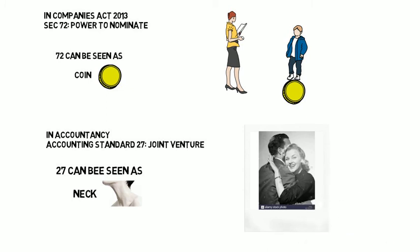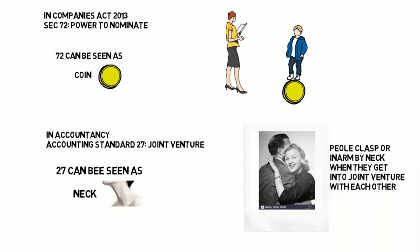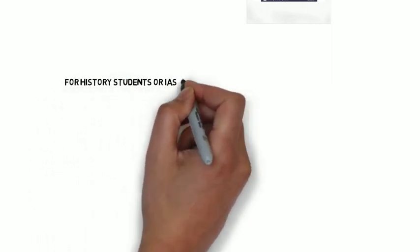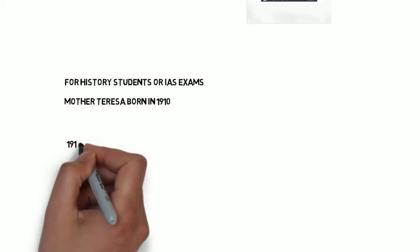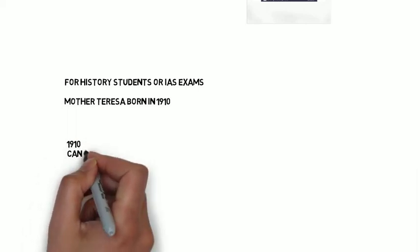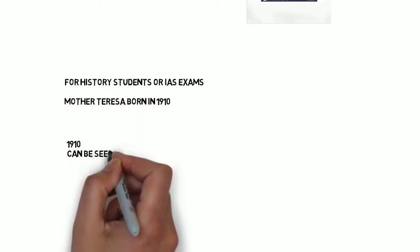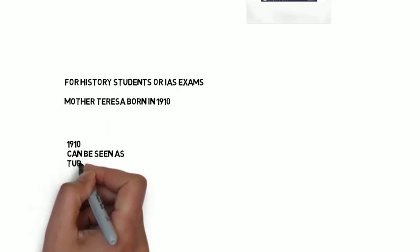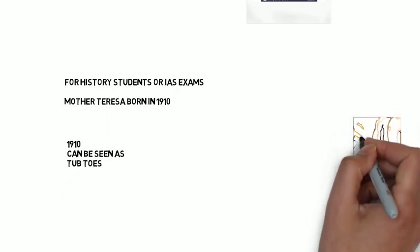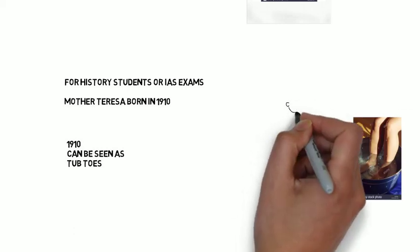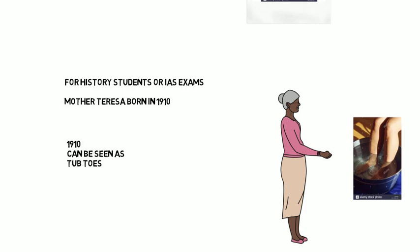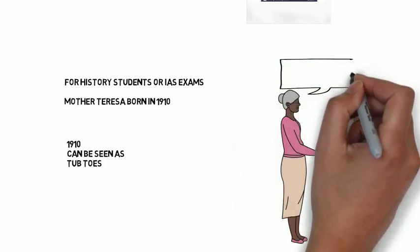For history students or IES exam aspirants: Mother Teresa was born in 1910. 1910 → 1 is T, 9 is B, 1 is T, 0 is S → T-B-T-S → 'tub' and 'toes'. Now link it: when my toes are in my tub, my mother tells me about Mother Teresa's birthday. We have linked the year 1910 to Mother Teresa!